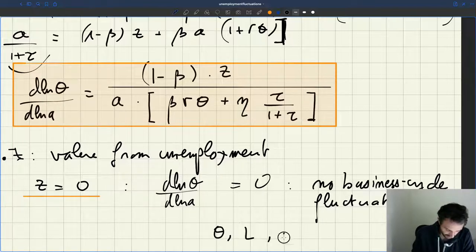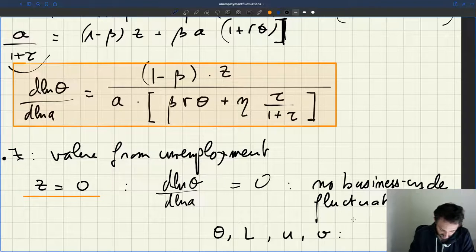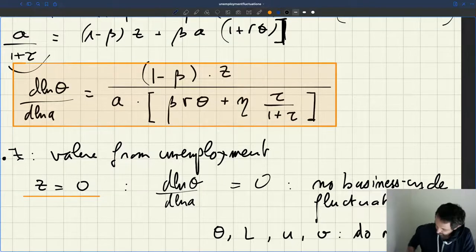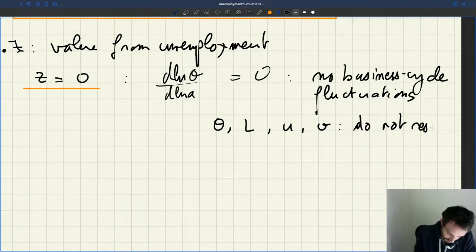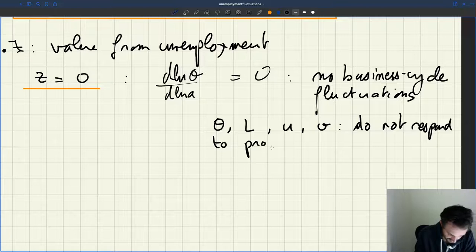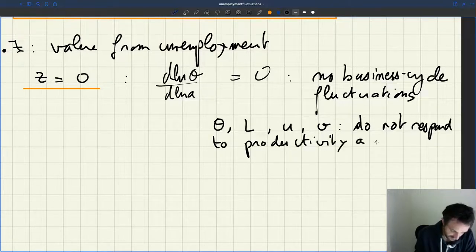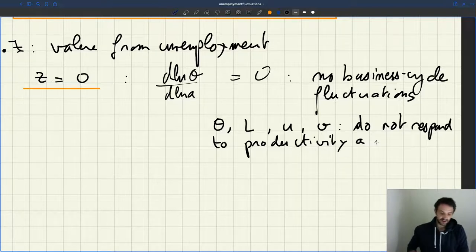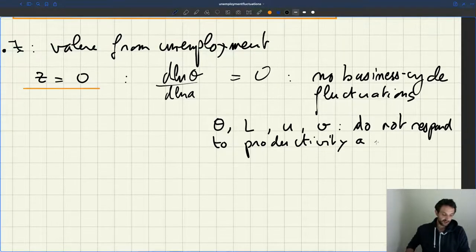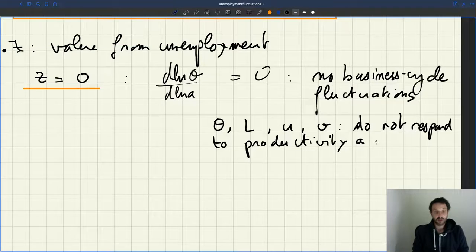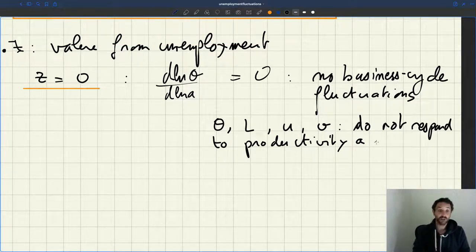So there are no business cycles in the model, in the sense that your tightness never moves. Your tightness never moves, the labor supply doesn't move. So here you really have no business cycle fluctuation. It means that theta, L (employment), the unemployment rate, the vacancy rate, they do not respond to productivity. If Z equals zero, there are just no business cycles at all.